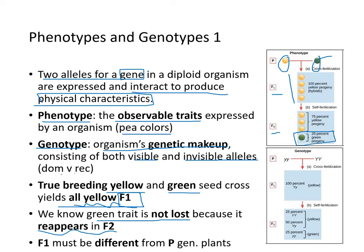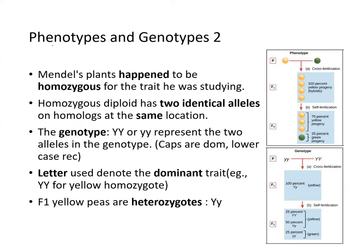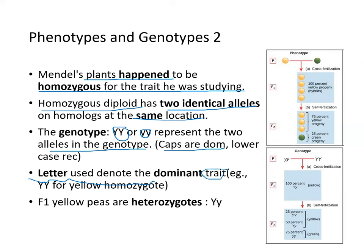True breeding yellow and true breeding green seeds yield all yellow in F1, so yellow must be dominant. We know green is not lost because it reappears in F2 in ratios of 3 to 1. F1 is no longer true breeding and must be different from the parent generation — F1 must be heterozygous. Mendel's plants were homozygous for the traits he was studying because they were all true breeding. The genotype big Y big Y, or little y little y, represents the two alleles. Caps represent dominant, lowercase recessive.